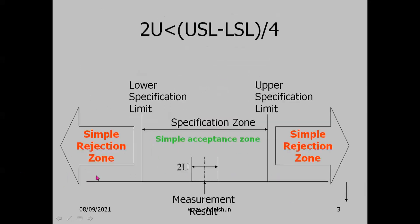Graphically, the upper specification limit and lower specification limit define the specification zone, which is the acceptance zone. Beyond this is the rejection zone. The measurement result is plotted, and then plus or minus 2U (capital U, the expanded uncertainty) gives the coverage interval.